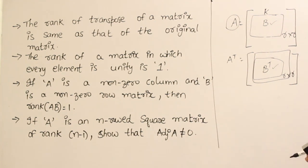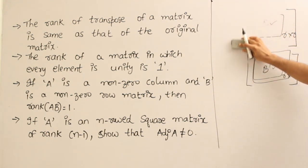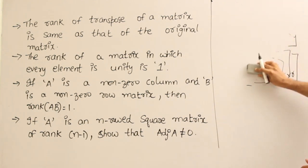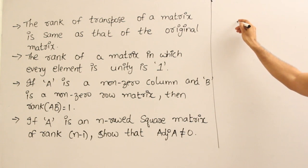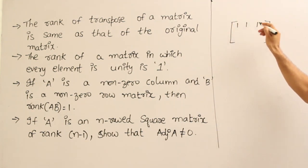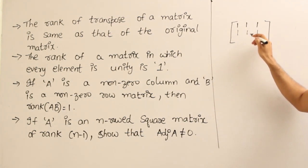And next point is the rank of a matrix in which every element is unity is 1 which means if you form a matrix like this in which every element is unity. I am just forming a 3 by 3 matrix just for the sake of example.